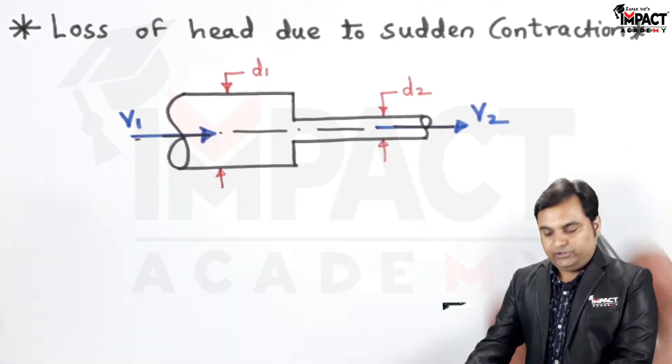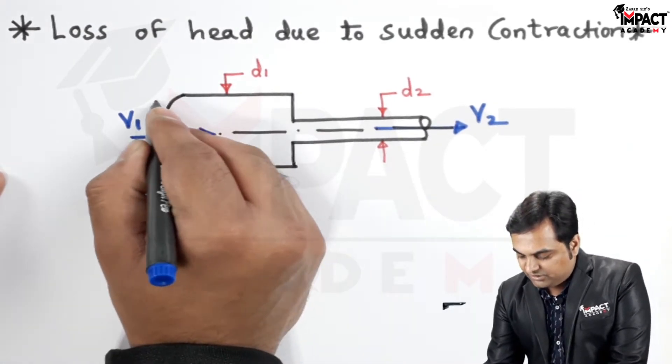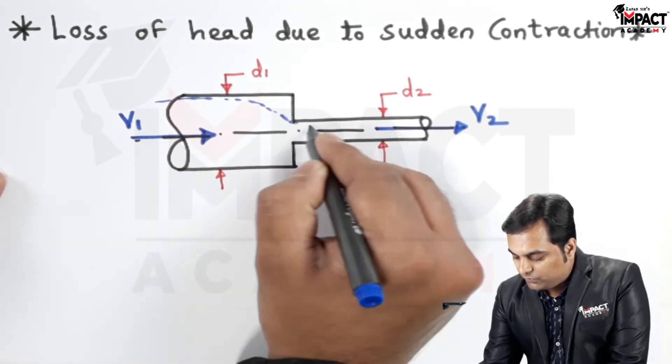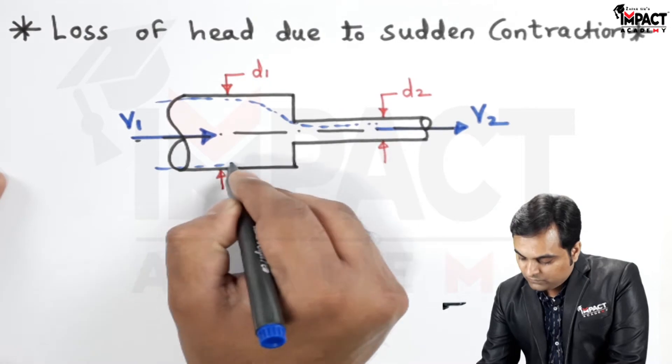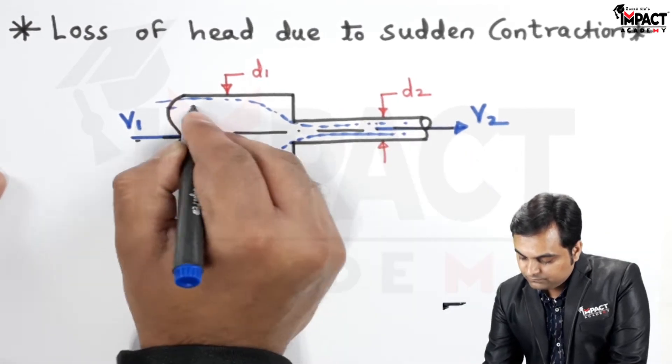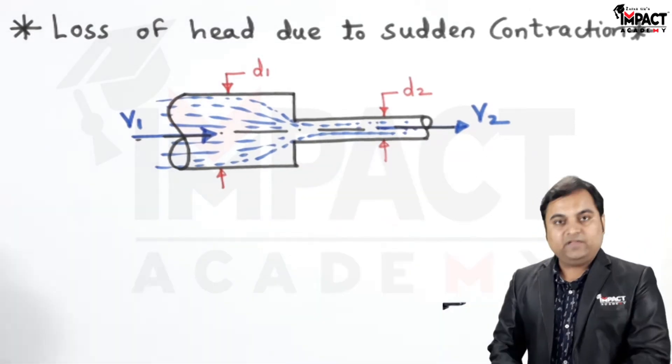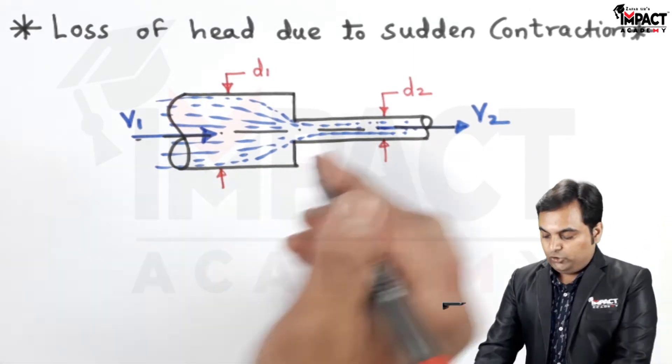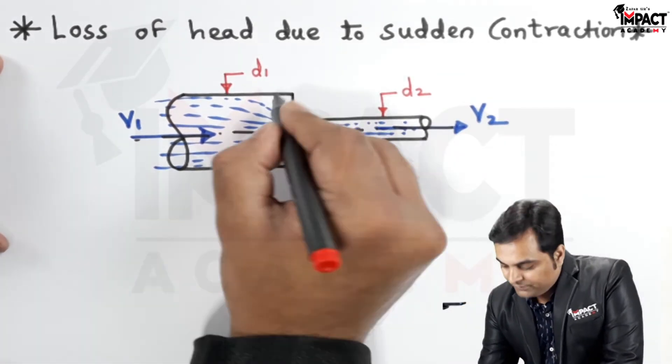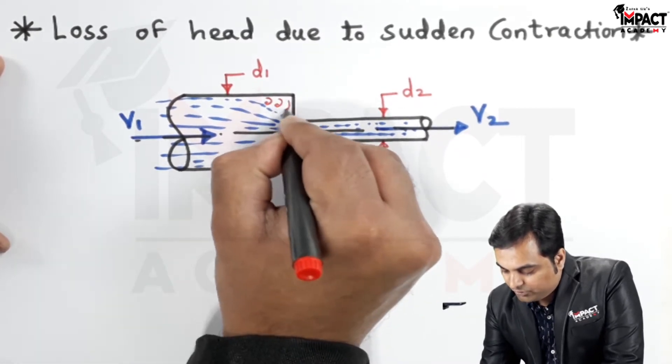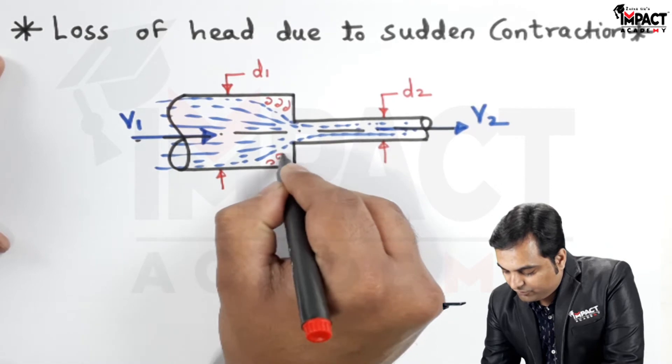When the fluid is flowing, because of this sudden contraction the behavior would be that it would be flowing in such a way. As we can see, due to the sudden contraction the fluid is not following this boundary and because of that there is eddies formation.